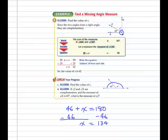Clearly an obtuse angle. If angle J and angle K are said to be complementary and the measure of angle K is 65 degrees, what is the measure of angle J? We would simply take 90 — because they're complementary — minus 65. The measure of angle J then would be 25 degrees.